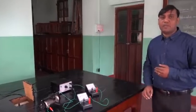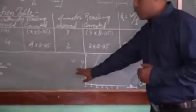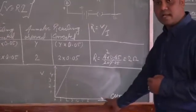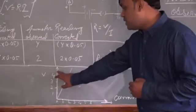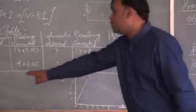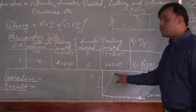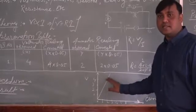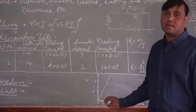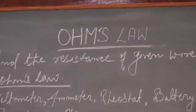After completing the calculations, we plot a graph. We plot potential difference versus current: current on the x-axis and potential difference on the y-axis. After marking all the observed readings, we draw a straight line. This straight line confirms that the resistance always remains constant, and this is how we confirm Ohm's law. Thank you.